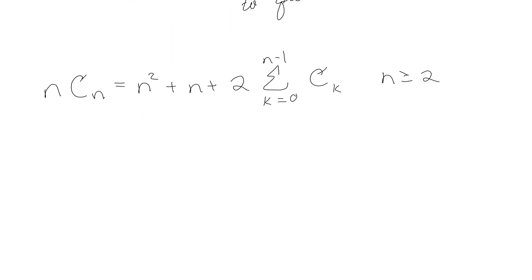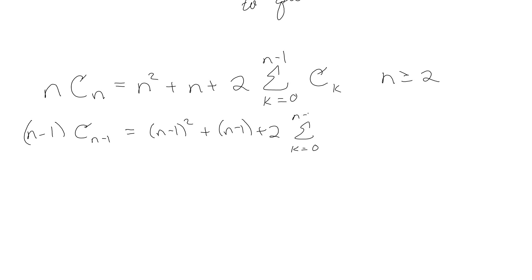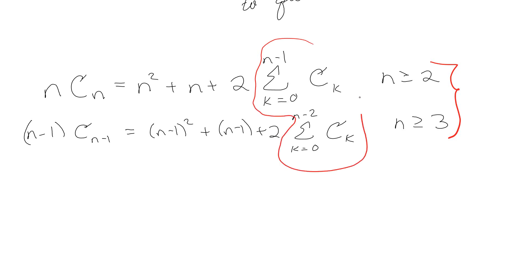Now this might seem really dumb, but just bear with me. We're going to rewrite this in terms of n − 1, just to see if we can find some kind of pattern. So: (n − 1)·C(n − 1) = (n − 1)² + (n − 1) + 2 times the sum from k = 0 to n − 2 of C(k), valid for n ≥ 3. We want to combine these so we can cancel out the summations.